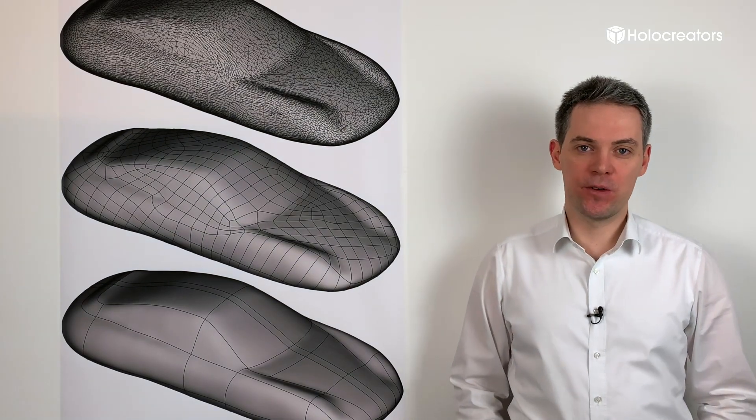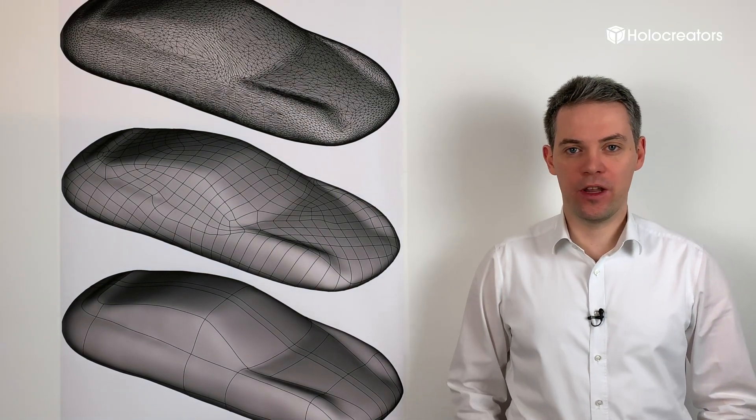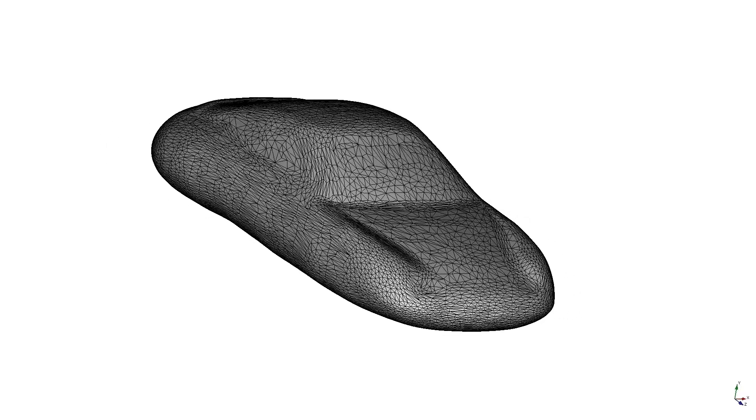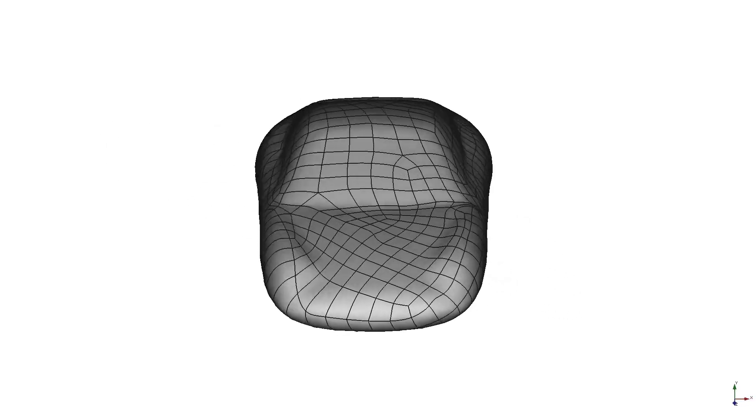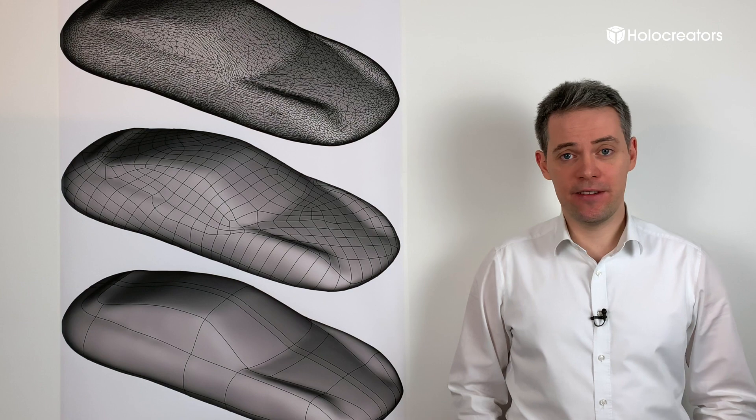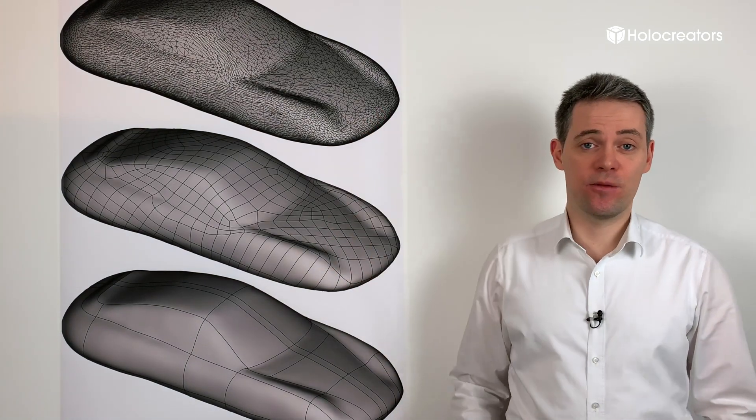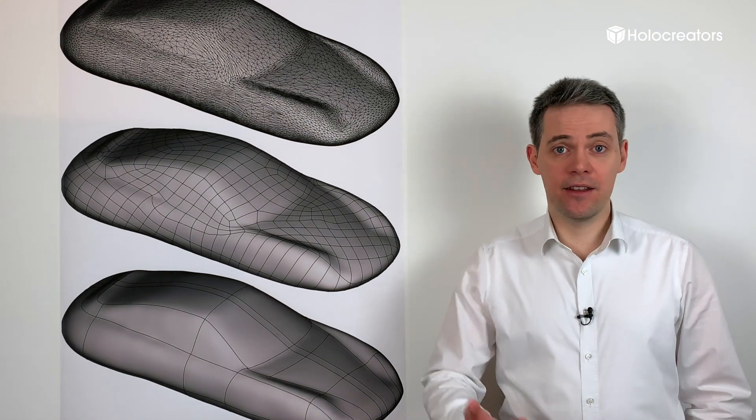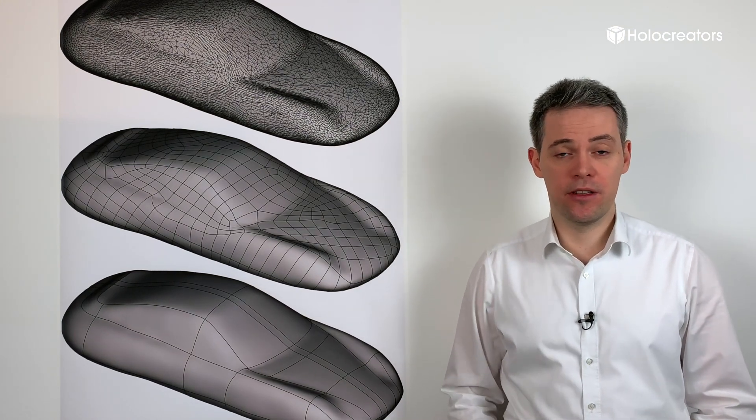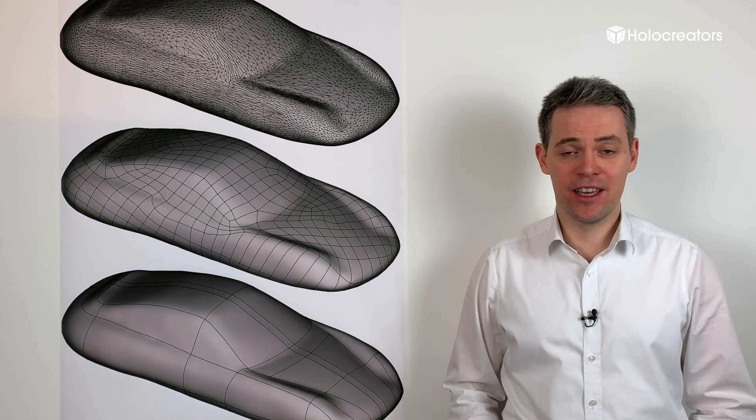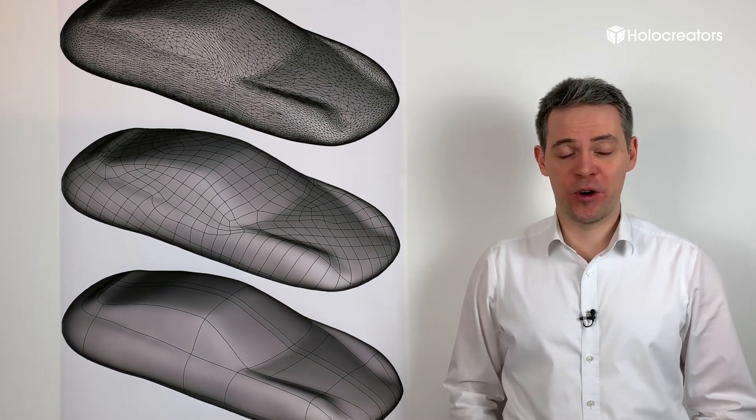By reverse engineering with surface modeling, we can convert a 3D scan into a CAD surface model. The goal is always to keep the deviation between the original 3D scan and the CAD surface model as small as possible. In the end, the files can be exported in the neutral CAD formats STEP, IGES, or XT.